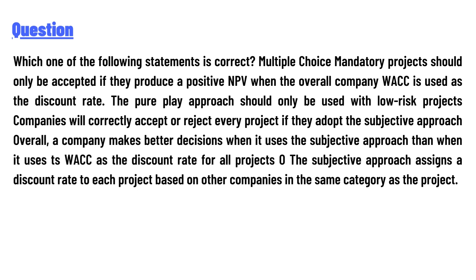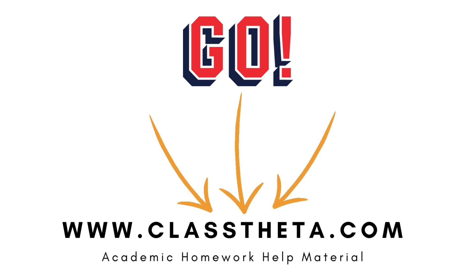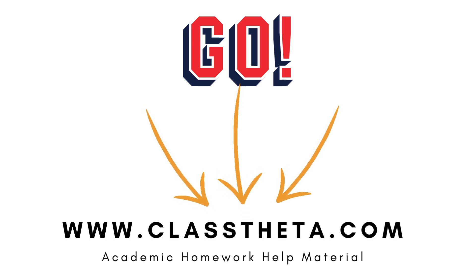Option E: the subjective approach assigns a discount rate to each project based on other companies in the same category as the project. The answer to the question is: the correct statement is that the subjective approach assigns a discount rate to each project based on other companies in the same category as the project.